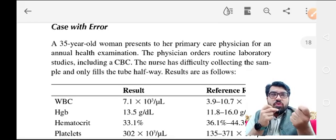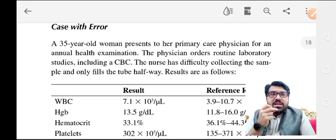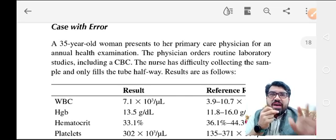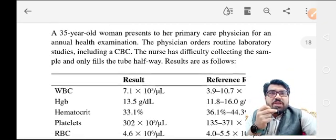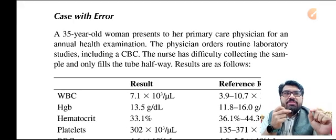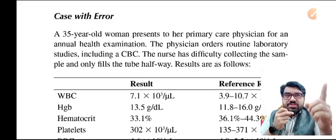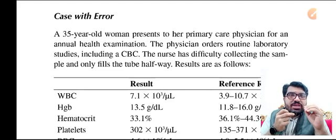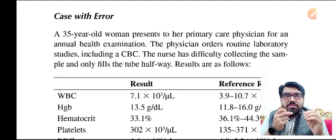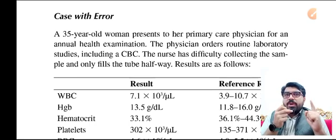I'm sharing a very important scenario so that you get the idea whether you are sitting in the ER or in the OPD — it will help you in the diagnosis. Most of the time you see the hemoglobin is normal, around 13–14, but the problem is with MCV and hematocrit. A 35-year-old woman presents to her primary care physician for an annual health examination. The physician orders routine laboratory studies including a CBC. The nurse has difficulty collecting the sample and only fills the tube halfway.